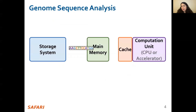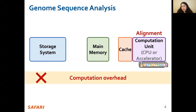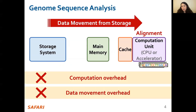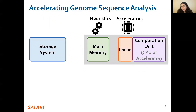Readmapping performs alignment on large genomic datasets containing millions of reads. Therefore, readmapping is both computationally expensive and incurs high data movement overhead. There has been significant effort into improving readmapping performance through efficient heuristics, hardware accelerators, and various filters that prune reads that do not require expensive computation.